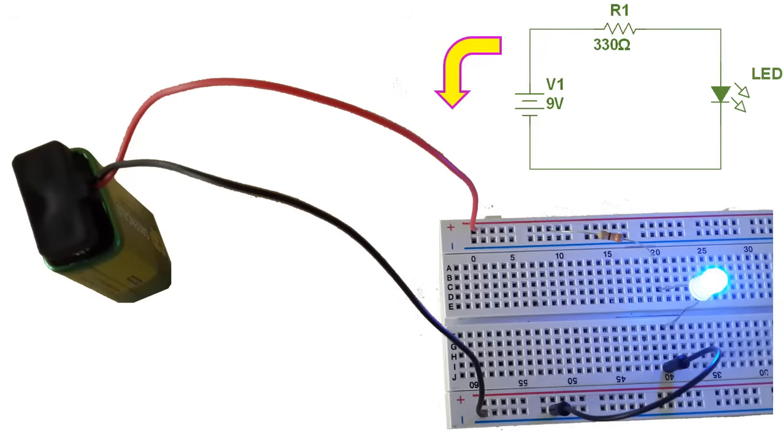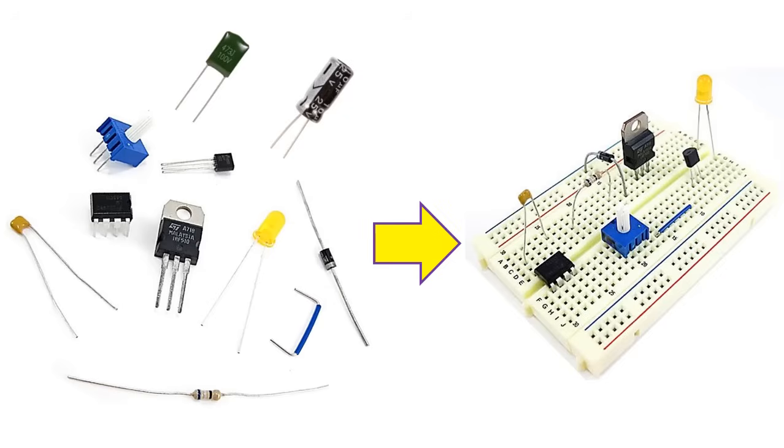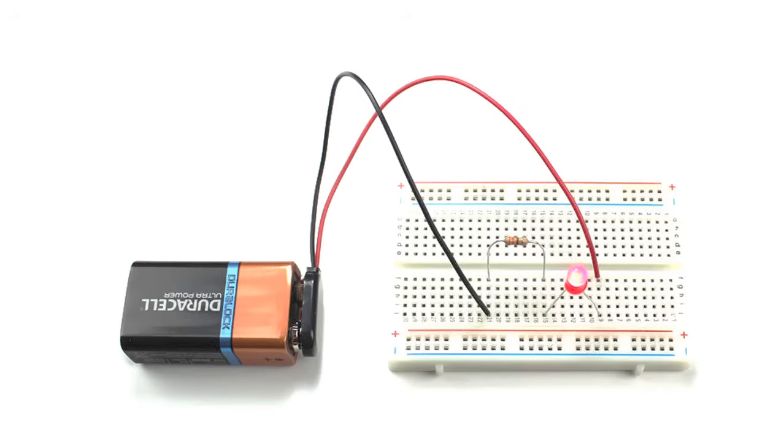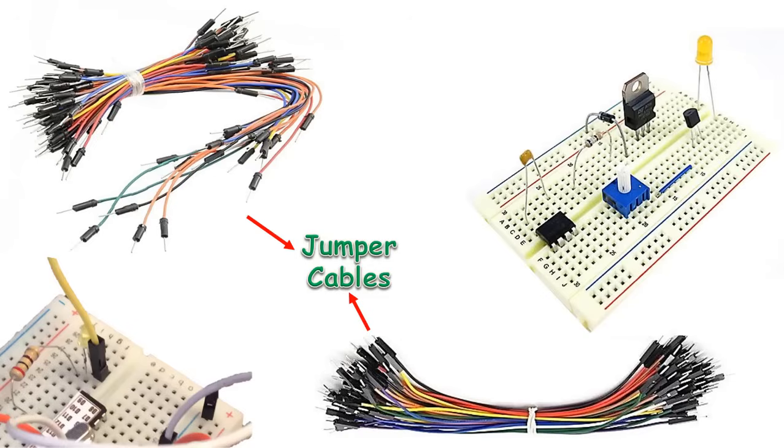On each edge of the breadboard, there typically runs two continuous bus lines. One is intended as a power bus and the other is intended as a ground bus. By plugging power and ground respectively into each of these, you can easily access them from anywhere on the breadboard. In order to connect things together using a breadboard, you either need to use a component or a wire. The most suitable for these wires are jumper cables.